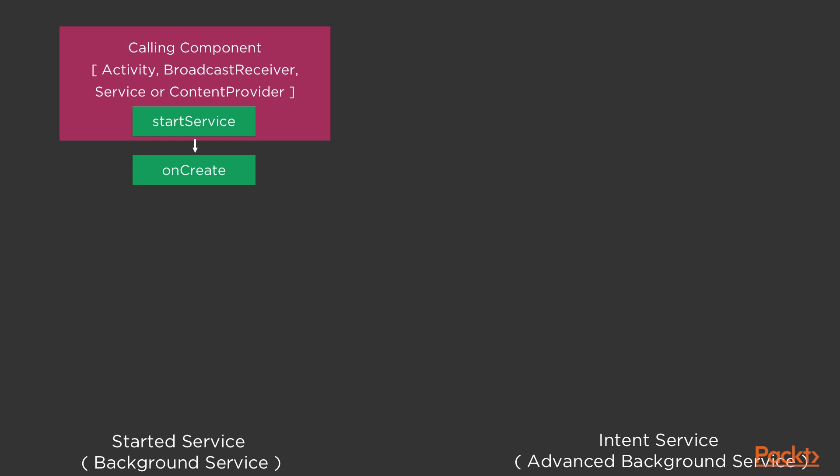What is the significance of the onCreate method? Within the onCreate method, the service class initializes itself, thus marking the creation of a complete service. Once the service is instantiated, it simply triggers the onStartCommand method, which is a very crucial method in case of a started service. Once the onStartCommand method is executed, the service starts to run in the main thread.